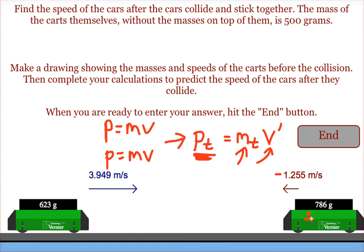Don't forget the cars themselves have a mass of 500 before you put anything on top of them. So make sure you include that for the total momentum at the beginning, and also when you're calculating the mass total. You then simply solve for the final velocity of the two cars when they're stuck together.